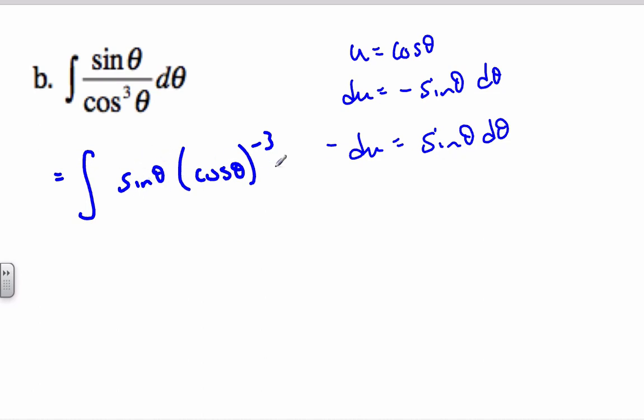And so now I can replace this in. And so my sine theta d theta is equal to negative DU. My cosine is U to the minus 1-third.